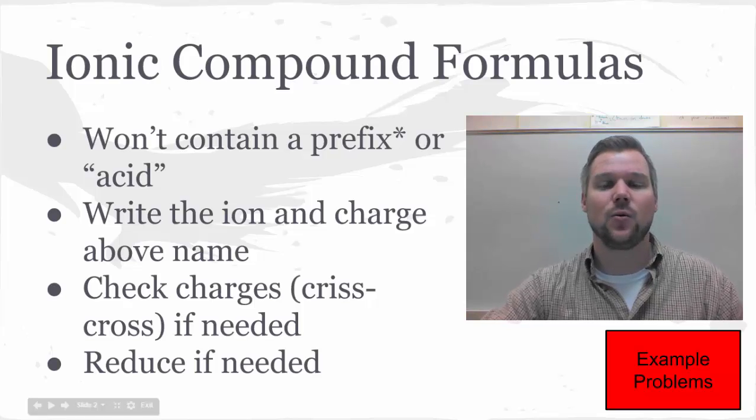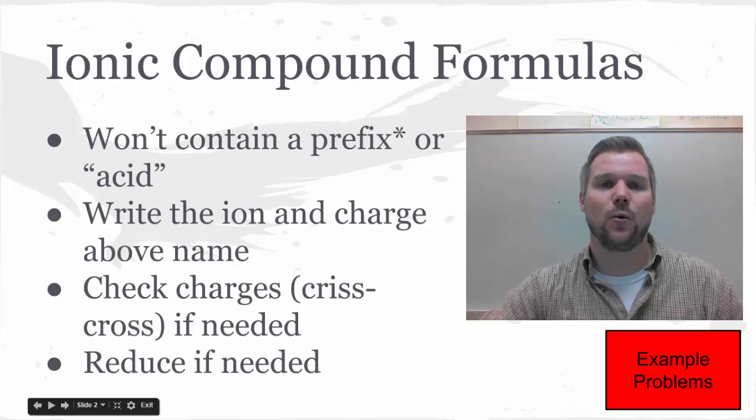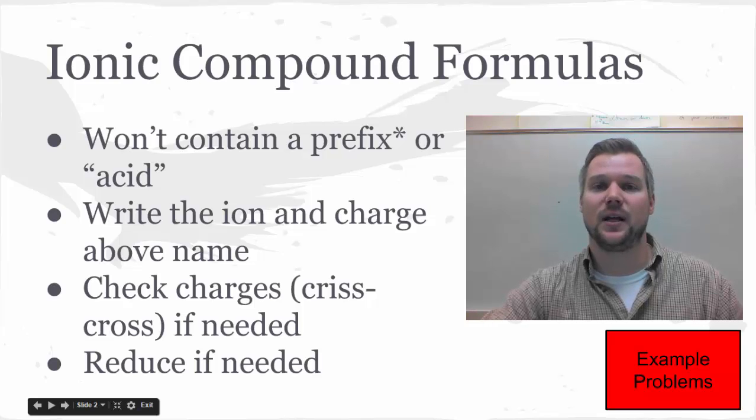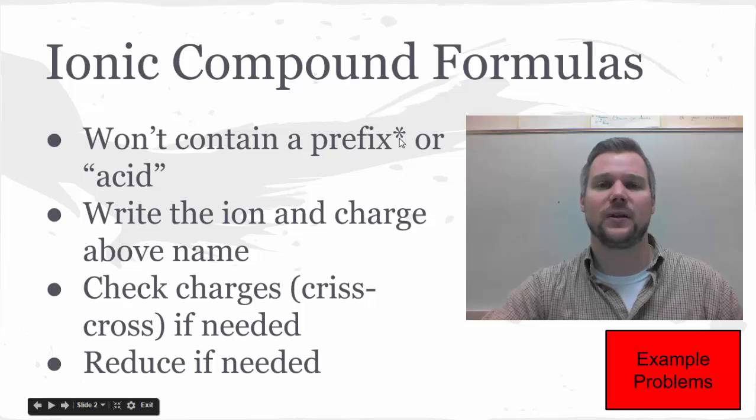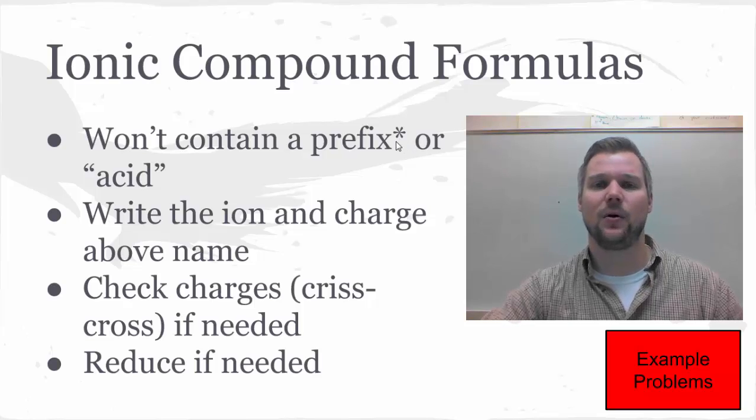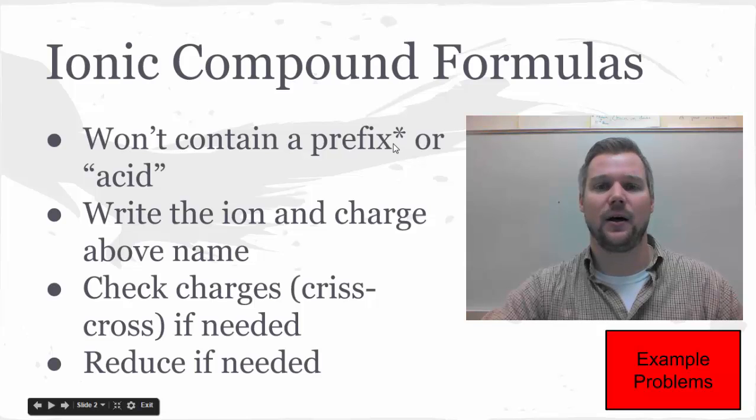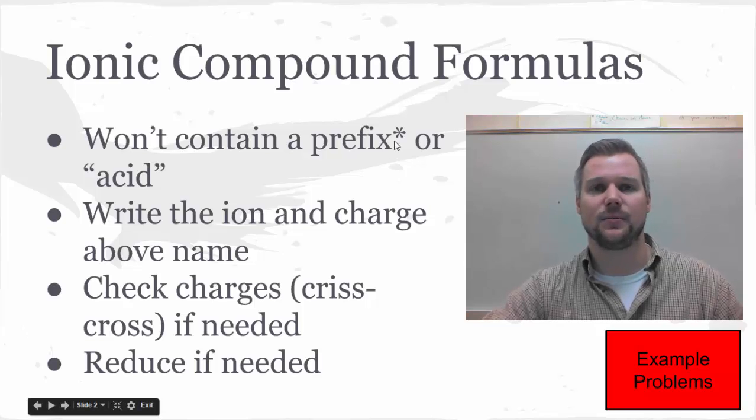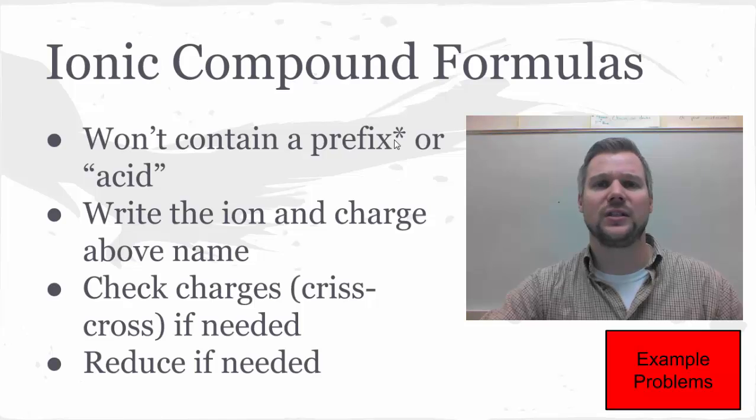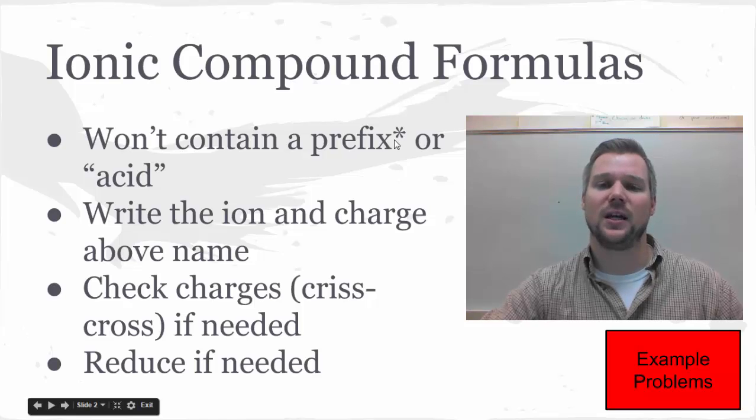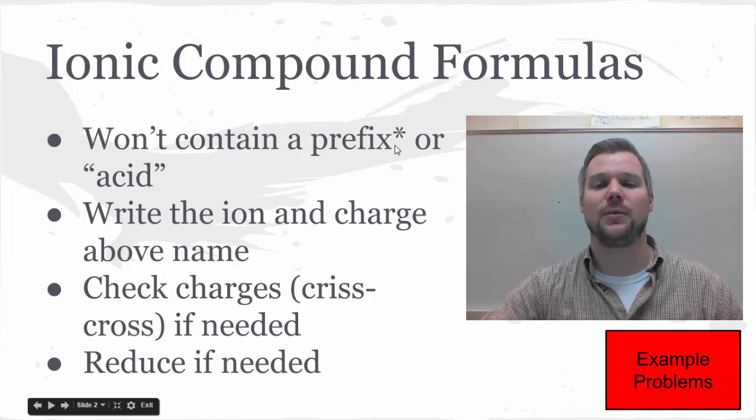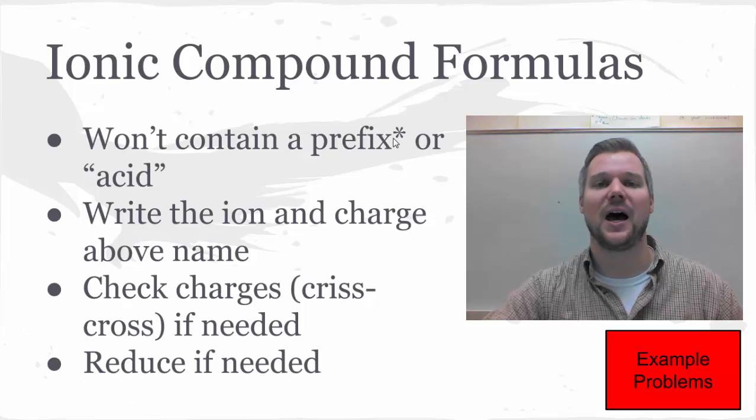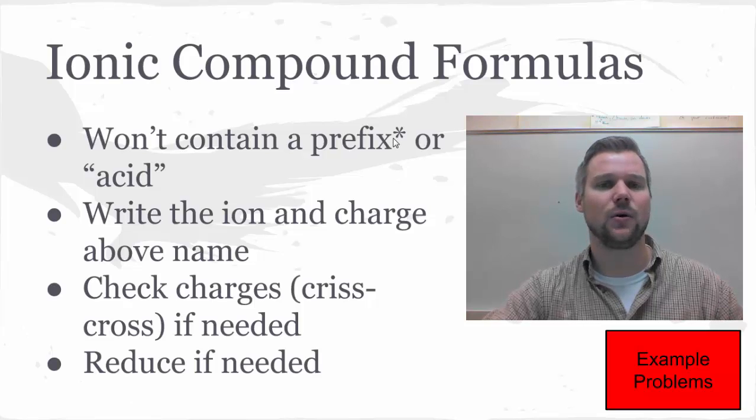The first one, ionic compounds, won't have a prefix or the word acid in the name. I have an asterisk next to prefix because there are a couple exceptions. You'll see per and hypo if you have oxyanions. Also, dichromate is where you'll see a number prefix, and di is important because we use the prefix di in covalent names. So you won't see a prefix or acid mostly.